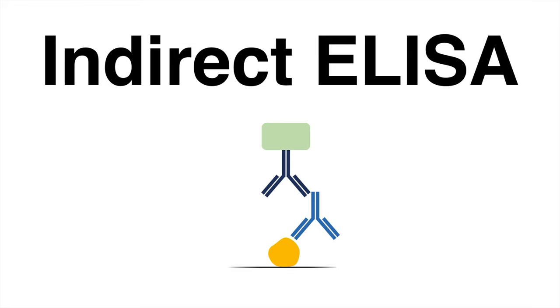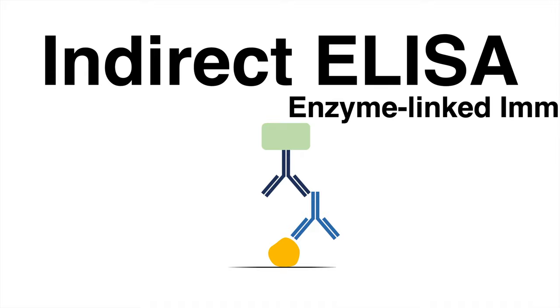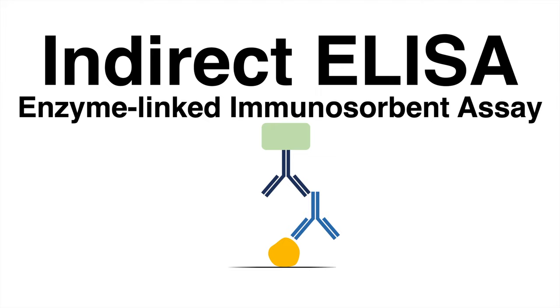The indirect ELISA is one of many variants to perform the enzyme-linked immunosorbent assay. The target antigen is first specifically captured by a primary antibody. That one is then captured by a secondary antibody which is linked to an enzyme.